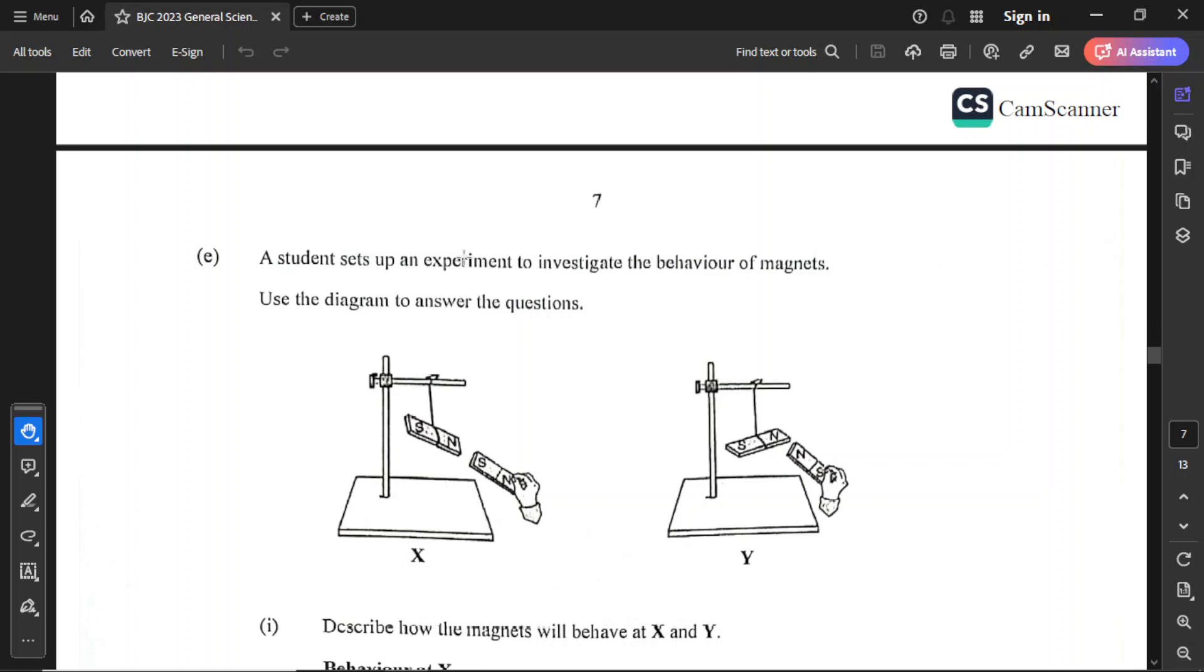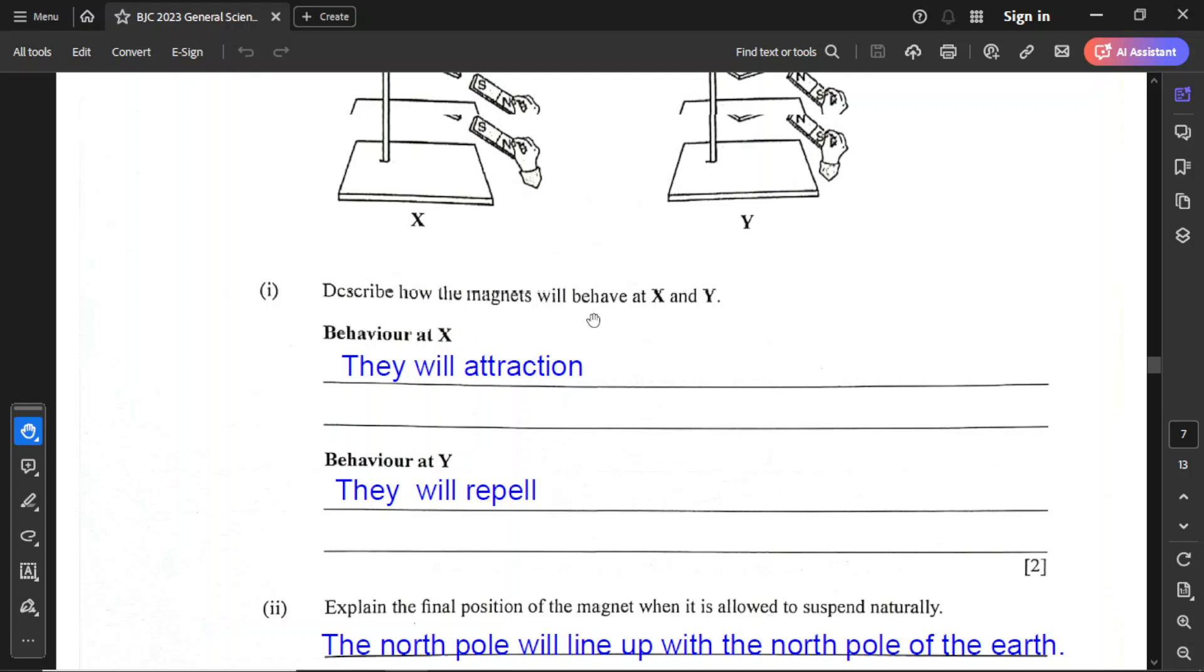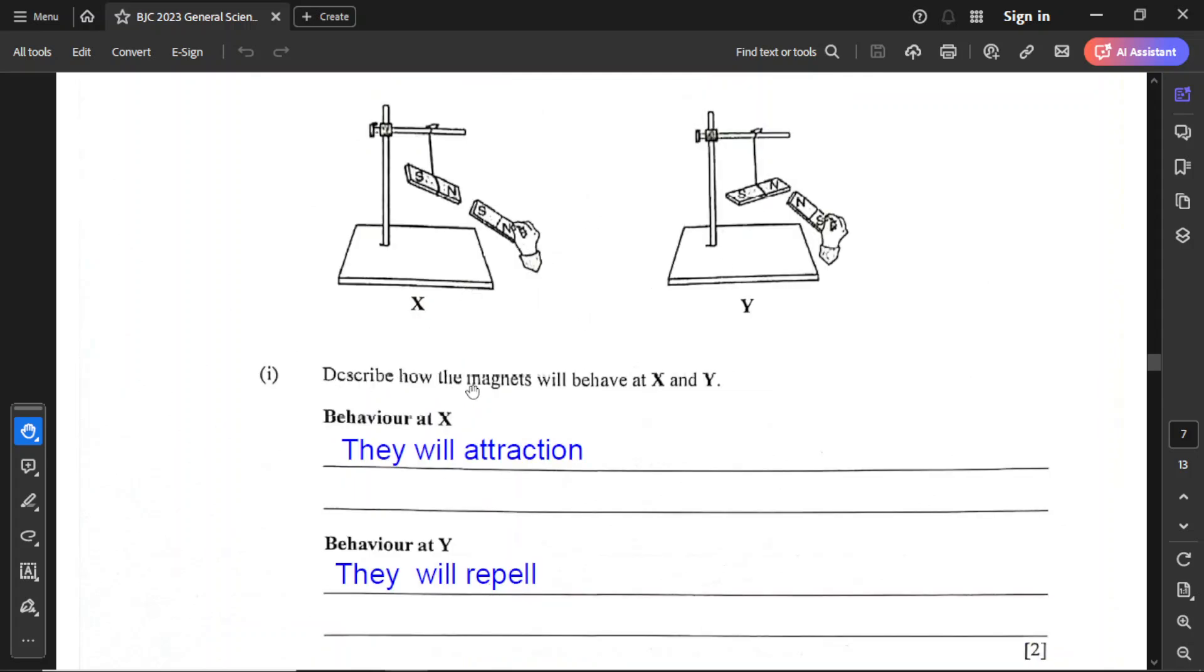For part E, a student set up an experiment to investigate the behavior of magnets. Use the diagram to answer the questions. We have X and Y. Describe how the magnets will behave at X and Y. Notice that at X, you have north going to south, so they will attract and go closer together. However, at Y, north and north, so they will repel. As you should know, like poles will repel, and unlike poles will attract.